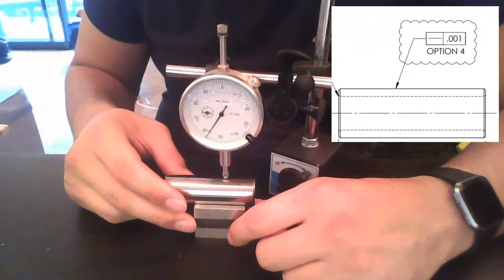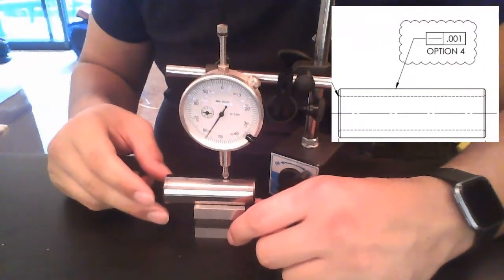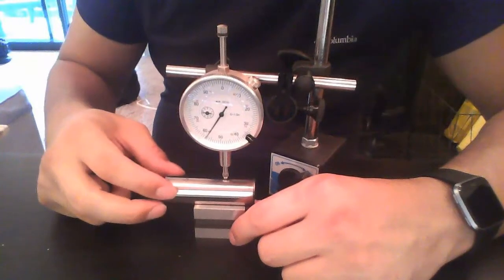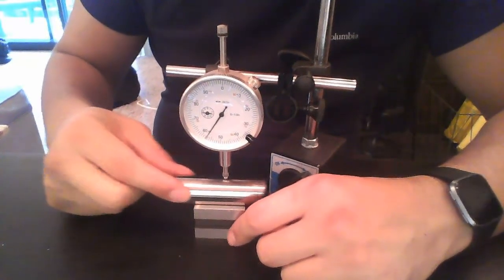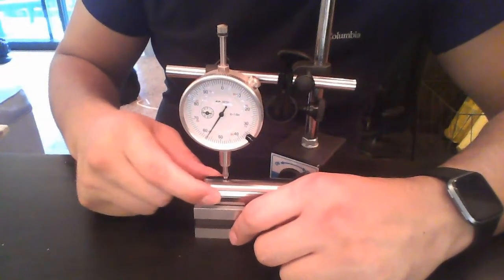Alright everybody, to measure straightness on a cylindrical surface, we typically run a dial indicator along the length of the cylinder without rotating.